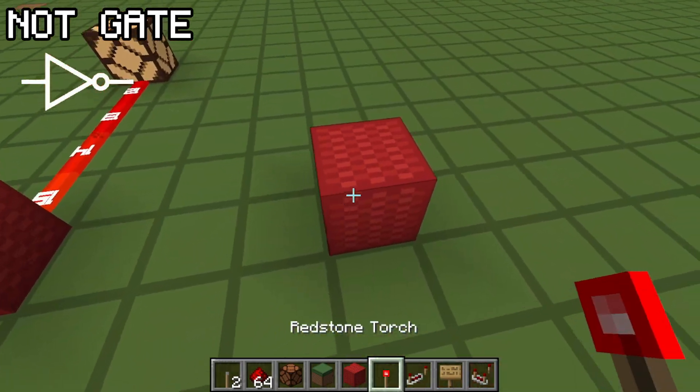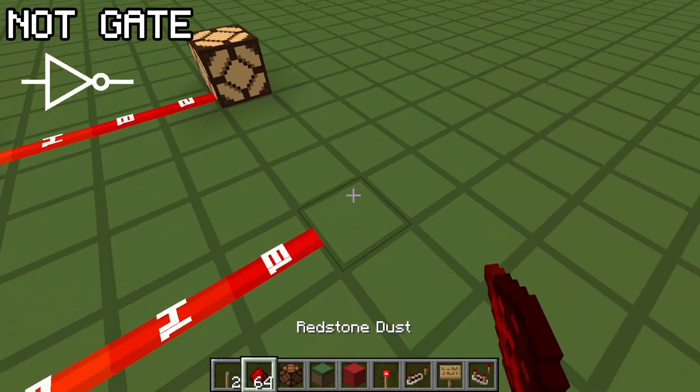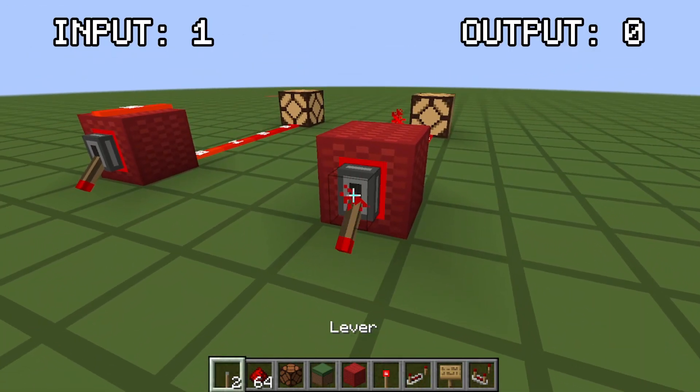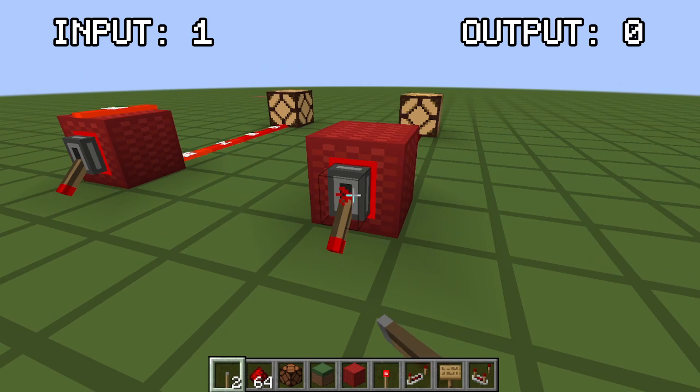Let's start simple with the NOT gate, which inverts the signal. If the input is on, the output is off, and vice versa.